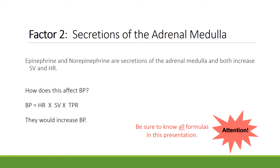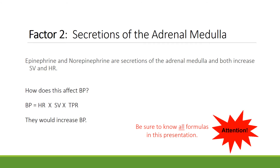The second factor important in blood pressure is the secretions of the adrenal medulla. Epinephrine and norepinephrine — also known as adrenaline and noradrenaline — are secretions of the adrenal medulla and both increase stroke volume and heart rate. Using the formula blood pressure equals heart rate times stroke volume times TPR, increasing stroke volume or heart rate or both would increase blood pressure. Be sure to learn all the formulas in this presentation.